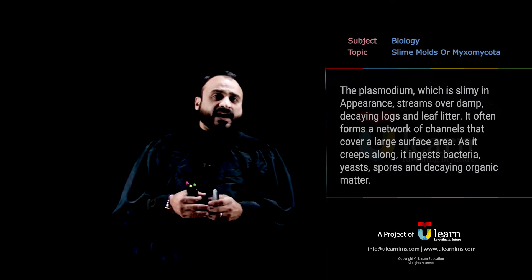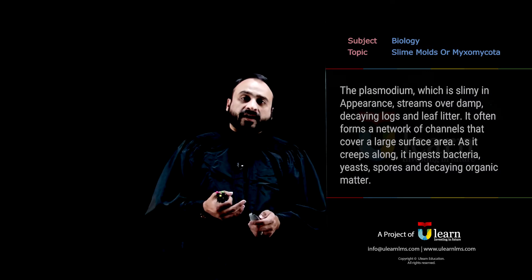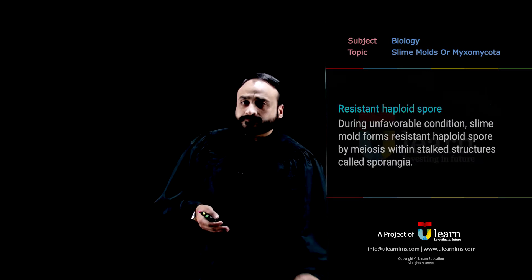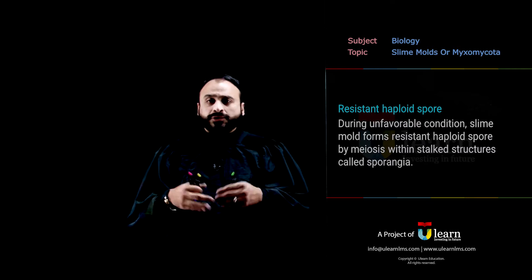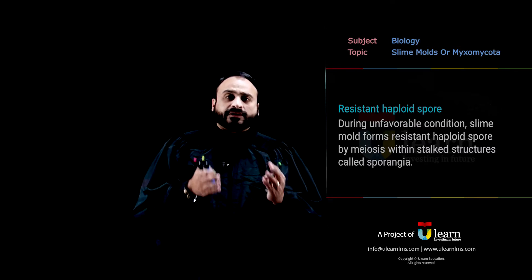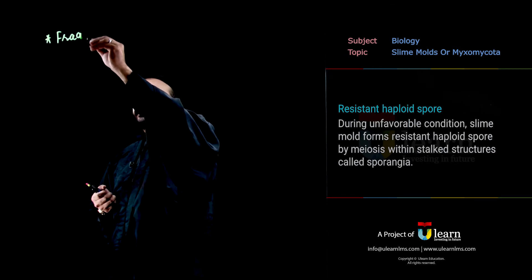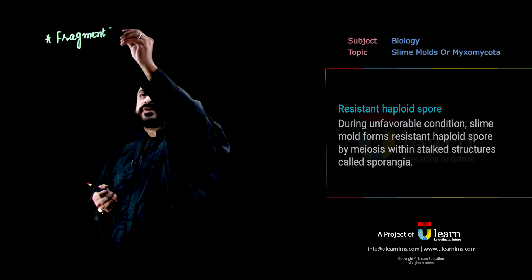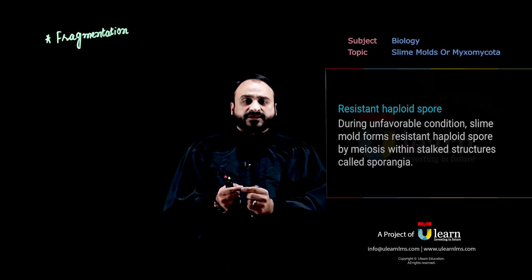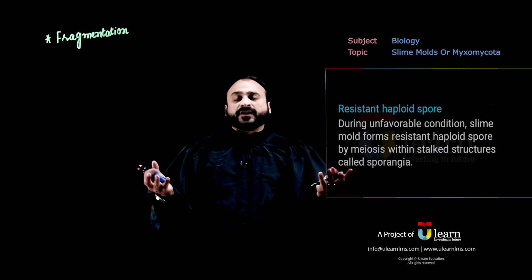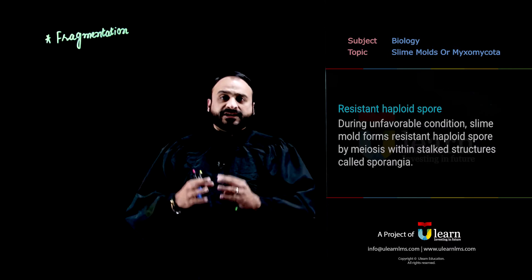When the plasmodium attains its maximum size, after this feeding stage it begins to increase in number. Under favorable environmental conditions — when food is abundant and nutrients are rapidly available — the plasmodium undergoes fragmentation. In this fragmentation process, fragments of the plasmodium are formed and each fragment grows further into a new slime mold. This is the form of slime mold seen under normal conditions.